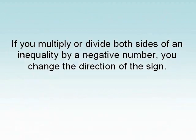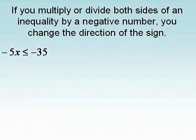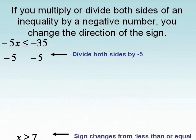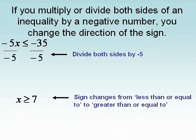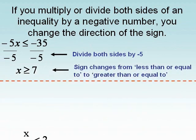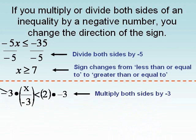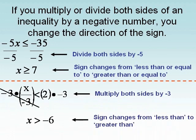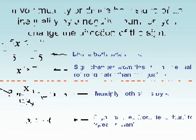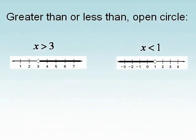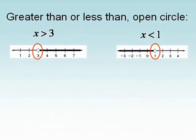If you multiply or divide both sides of an inequality by a negative number, you change the direction of the sign. Greater than or less than? Open circle.